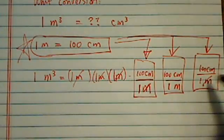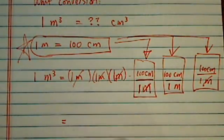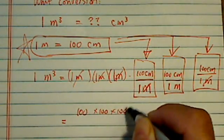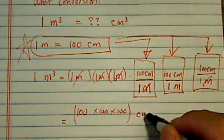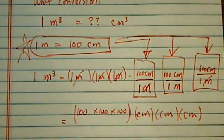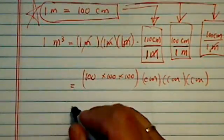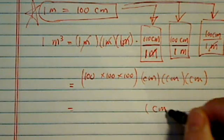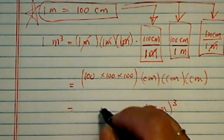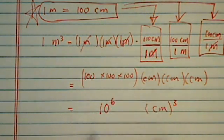Now watch the magic happen from here. I have a hundred times a hundred times a hundred again, and then I have a centimeter times centimeter times centimeter. Now what do you know? I have centimeter cubed, just like what I needed. A hundred times a hundred times a hundred, that's ten to the six.